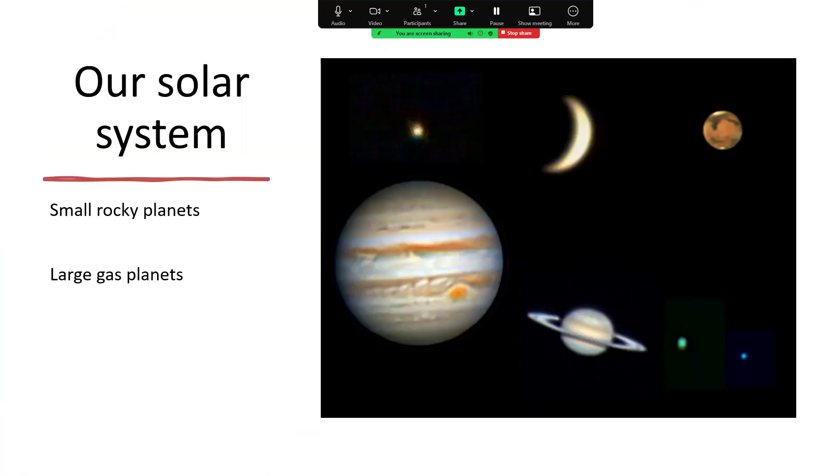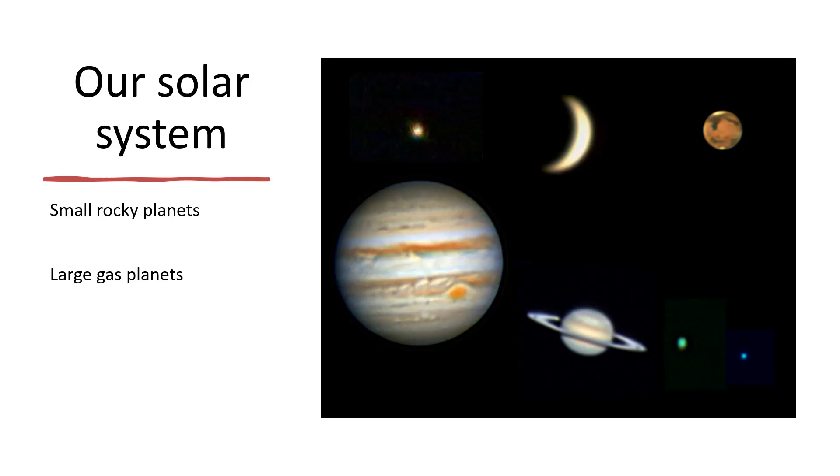Our solar system consists of two classes of planets: small rocky planets and large gas giants. These are images I've taken with my telescope here at home in the backyard. It's a 14-inch Schmidt-Cassegrain telescope with a webcam attached in place of the eyepiece, producing these images after making a video and stacking the results. On the top row we've got Mercury, Venus, and Mars.